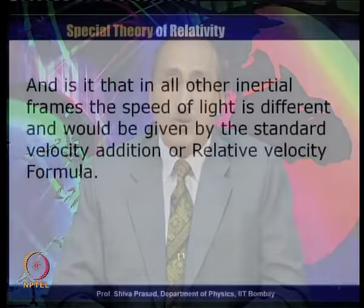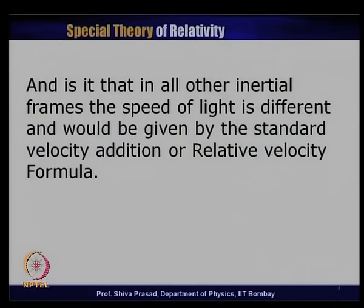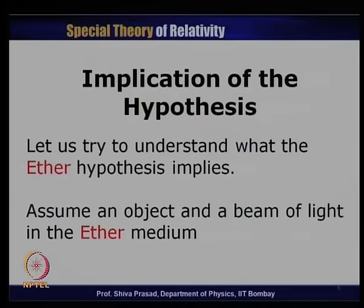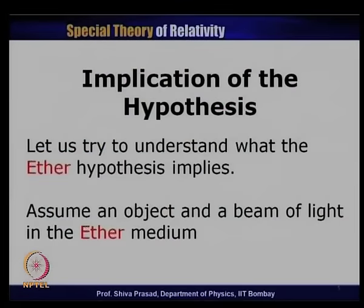If you go to any other frame different from the ether frame, then the speed of light should be different, and it should be given by the standard velocity addition formula well known in classical mechanics. So essentially, if I change my frame of reference from ether, even though the frame is inertial, the speed of light would be different. Let us try to understand what the ether hypothesis implies.